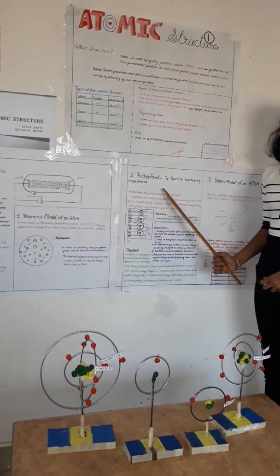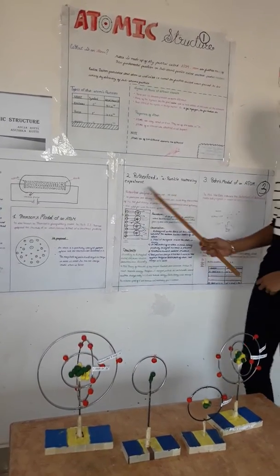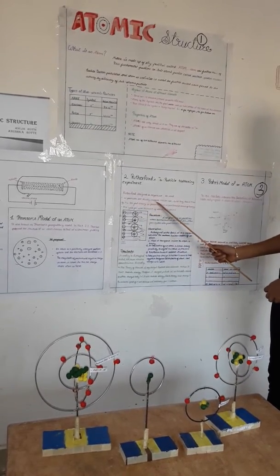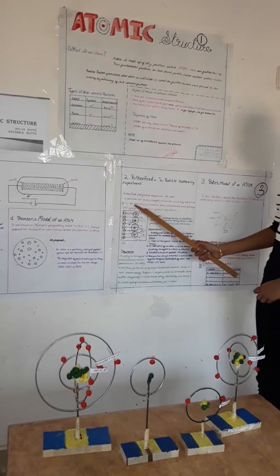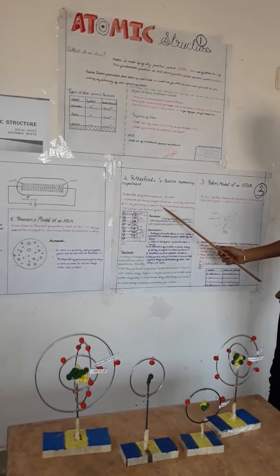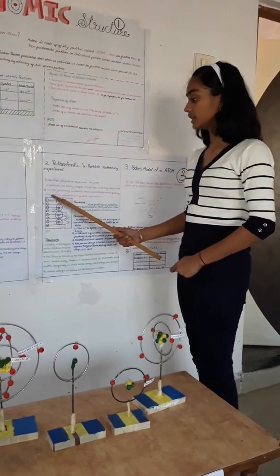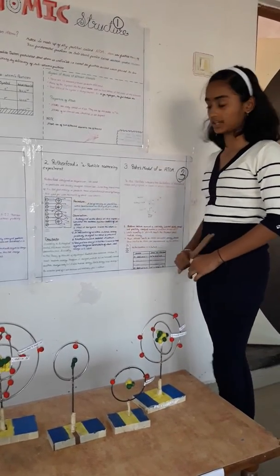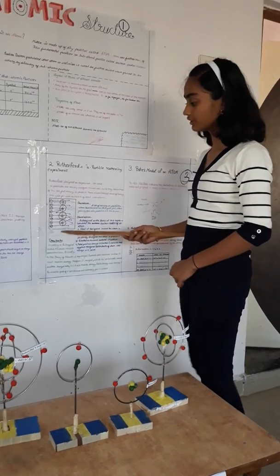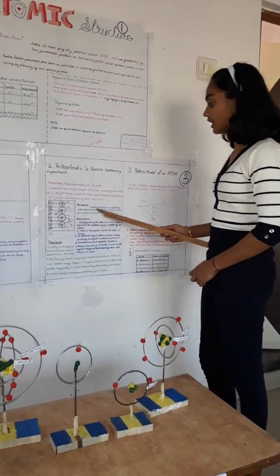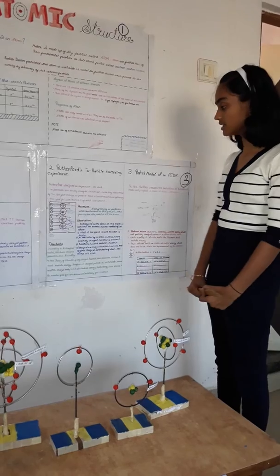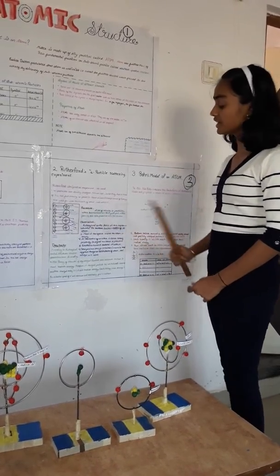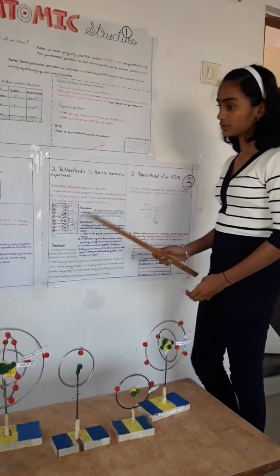Now Rutherford's Alpha Particle Scattering Experiment. Rutherford designed an experiment. He used alpha particles, doubly charged helium ions. The fast moving alpha particles had considerable amount of energy. He used thin gold foil with thickness of about 1000 atoms. Fast moving alpha particles were bombarded on this thin sheet and passed through to the screen.